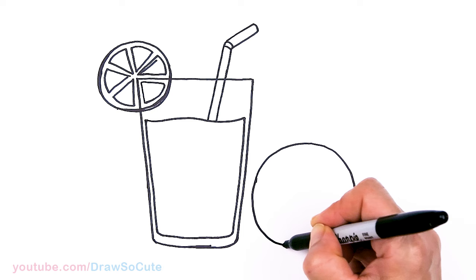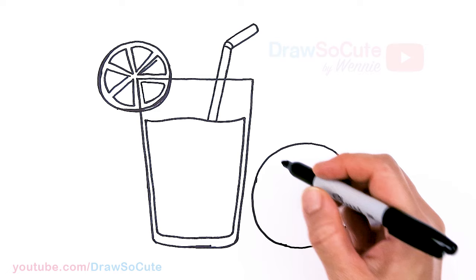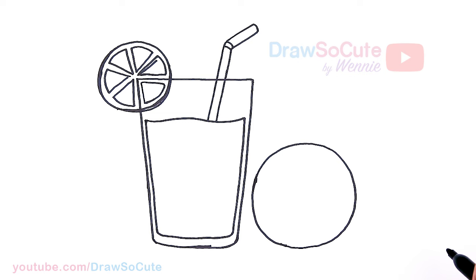And don't worry too much about it being exactly a circle because it's an orange, right? It can be slightly ovalish and lopsided if it needs to be.